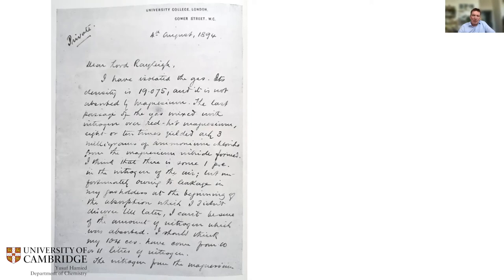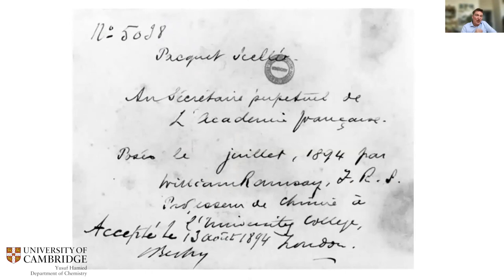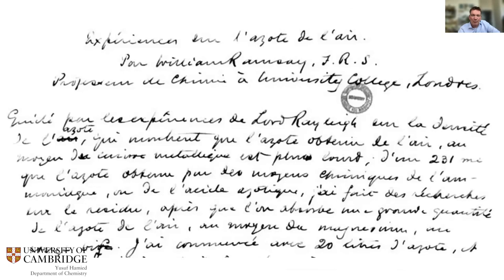A few days later Ramsay suggested calling it Q or quid — Latin for 'what.' Rayleigh tried various names and suggested 'argon' from the Greek for air, but noted that when tried privately the response was usually 'when might we expect Moses?' Rayleigh's wife reported it was also known as 'Mrs Harris,' a reference to an imaginary friend from Dickens' Martin Chuzzlewit.